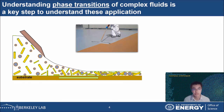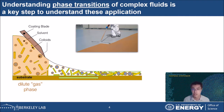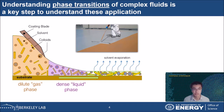Here is an example of an industrial coating process which involves phase transitions. A coating blade drags the coating along a surface. The coating is a solvent suspending colloid. In the region behind the blade is the dilute coating as manufactured — it has to be liquid-like so it can be spread. Some of the solvent is swept out by the blade leaving a denser liquid suspension. The thin layer left behind evaporates, densifying into a solid phase. It is important to understand this phase transition as we want to control the quality of the coating.